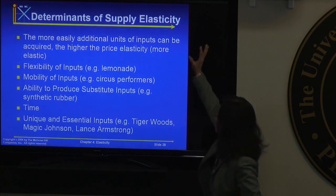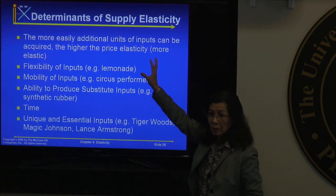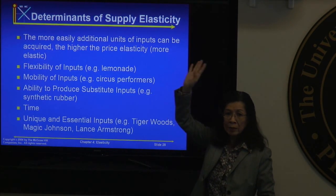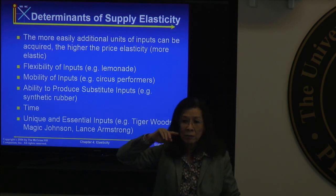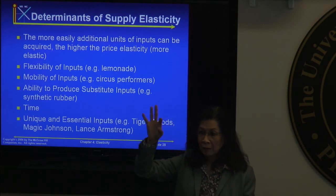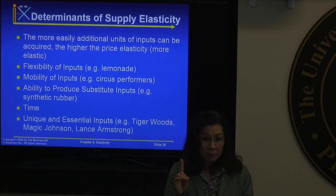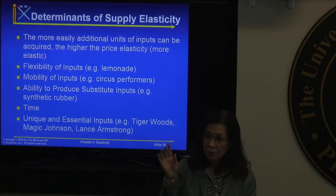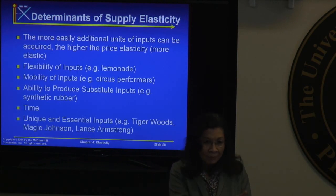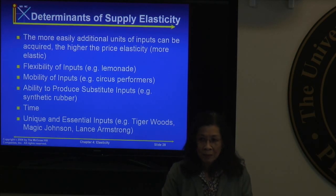Here are the determinants of price elasticity of supply. On the demand side we had three factors: time, budget share, and degree of substitutability. On the supply side: the more easily additional inputs can be acquired, the higher the price elasticity of supply.